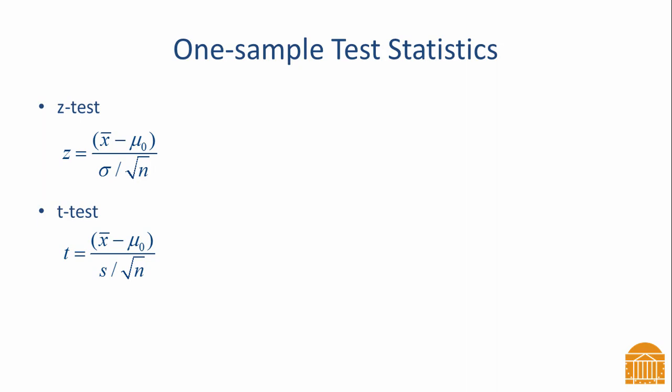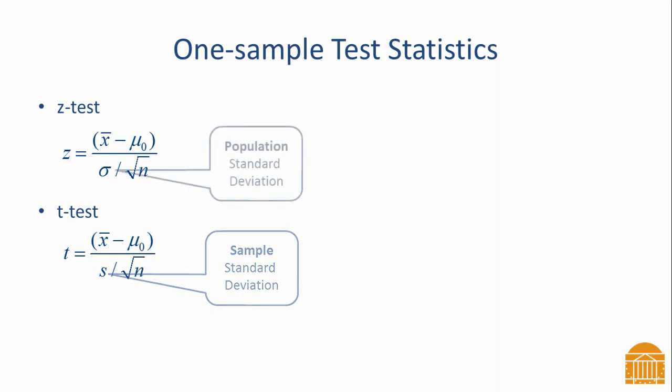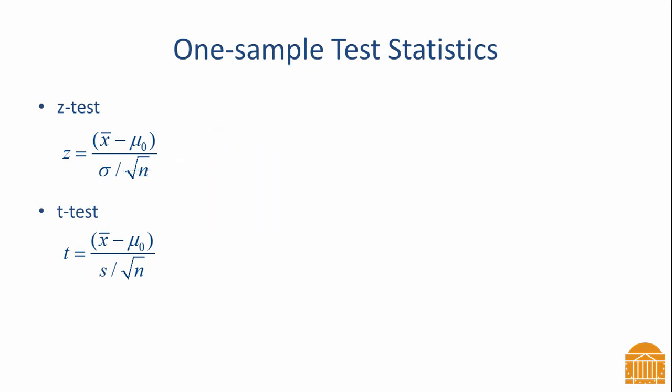It is very similar to the one sample z-test. The main difference is that we use the sample standard deviation instead of the population standard deviation in the calculation. A consequence of this change is that the t-test follows a t-distribution instead of a standard normal distribution.